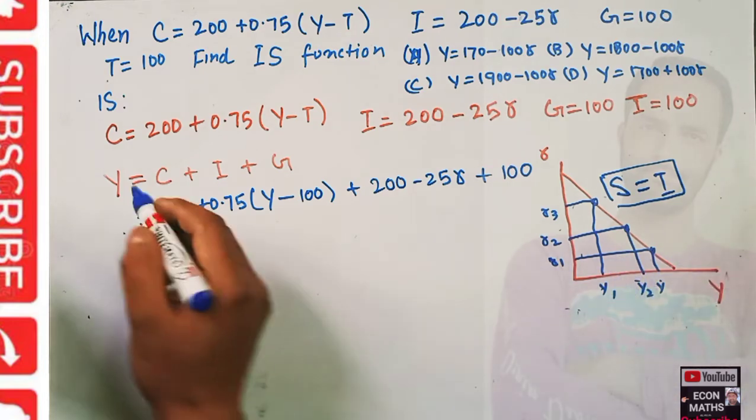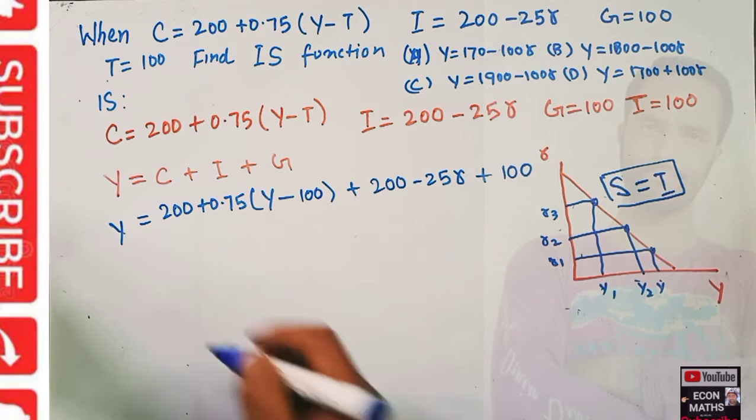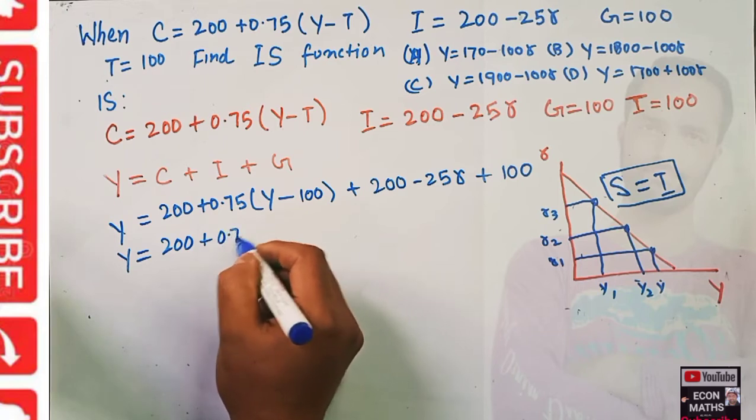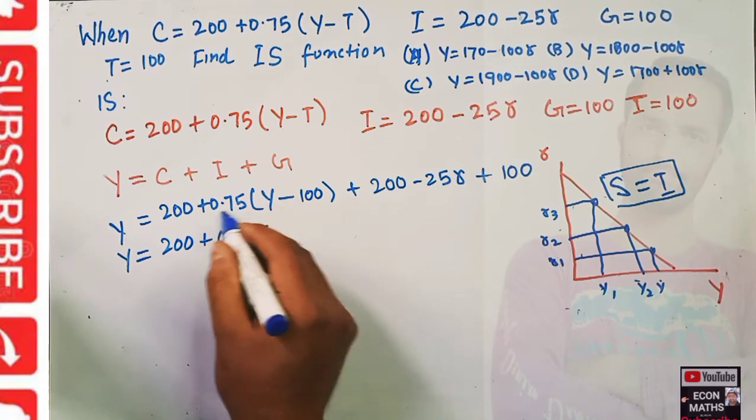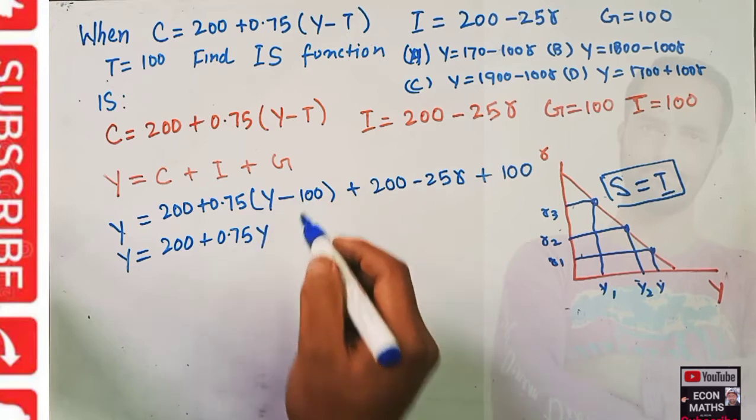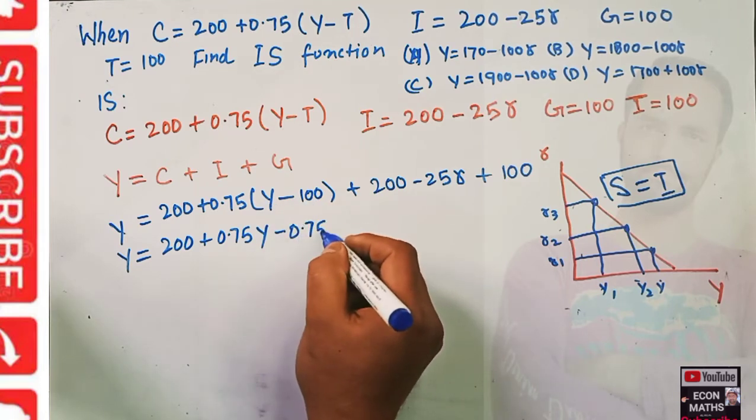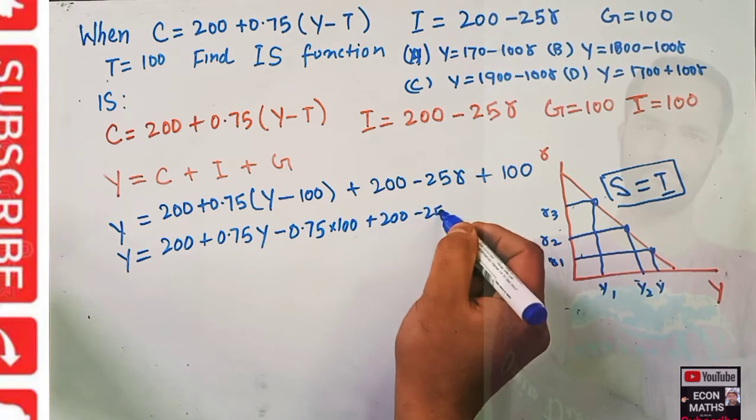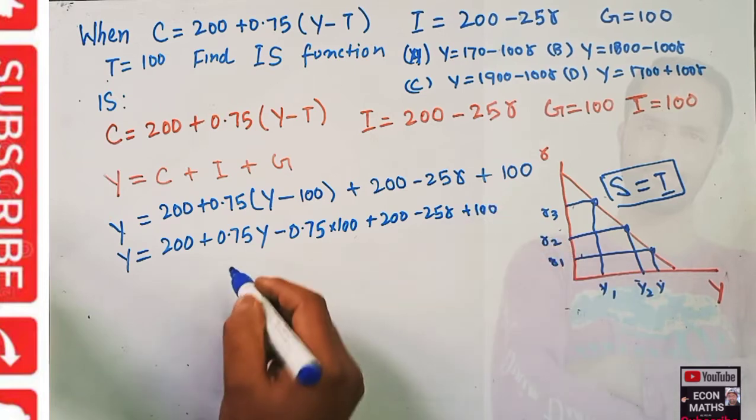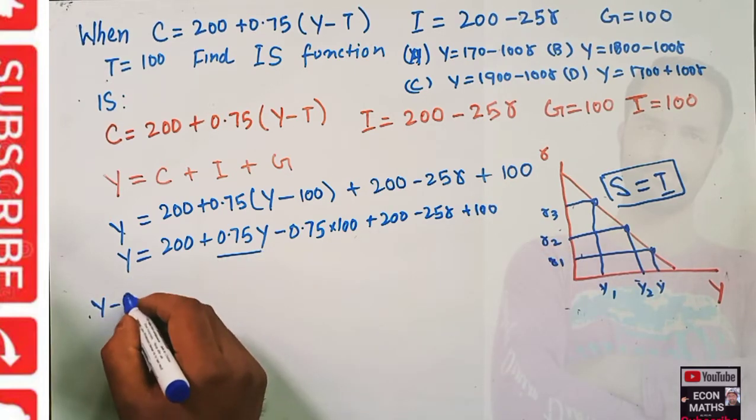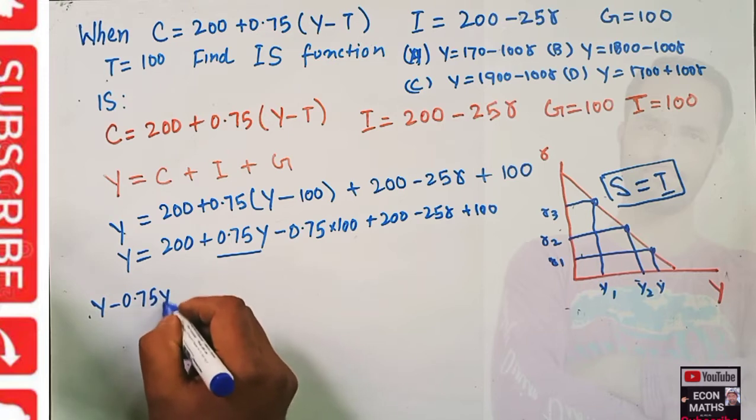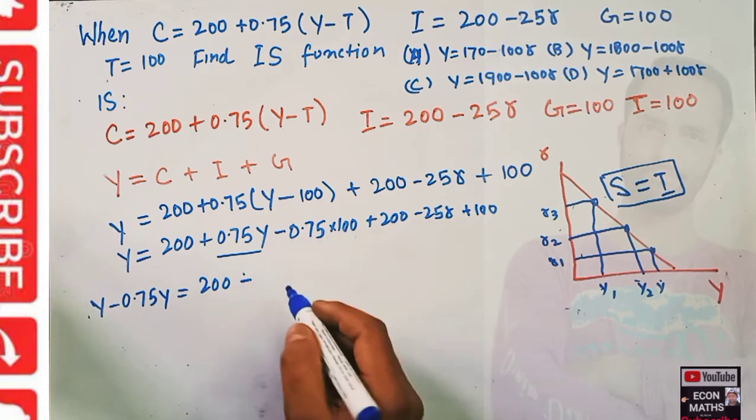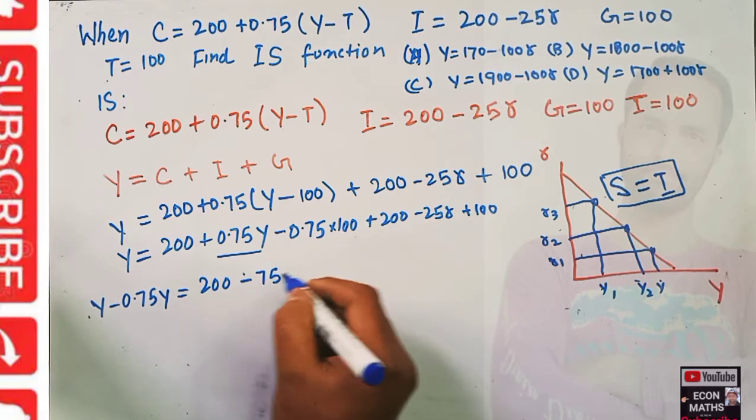So Y = 200 + 0.75Y minus 0.75 times 100 plus 200 - 25r plus 100. Transposing this term to the left hand side: Y - 0.75Y equals 200 minus 75 minus 25r plus 100.